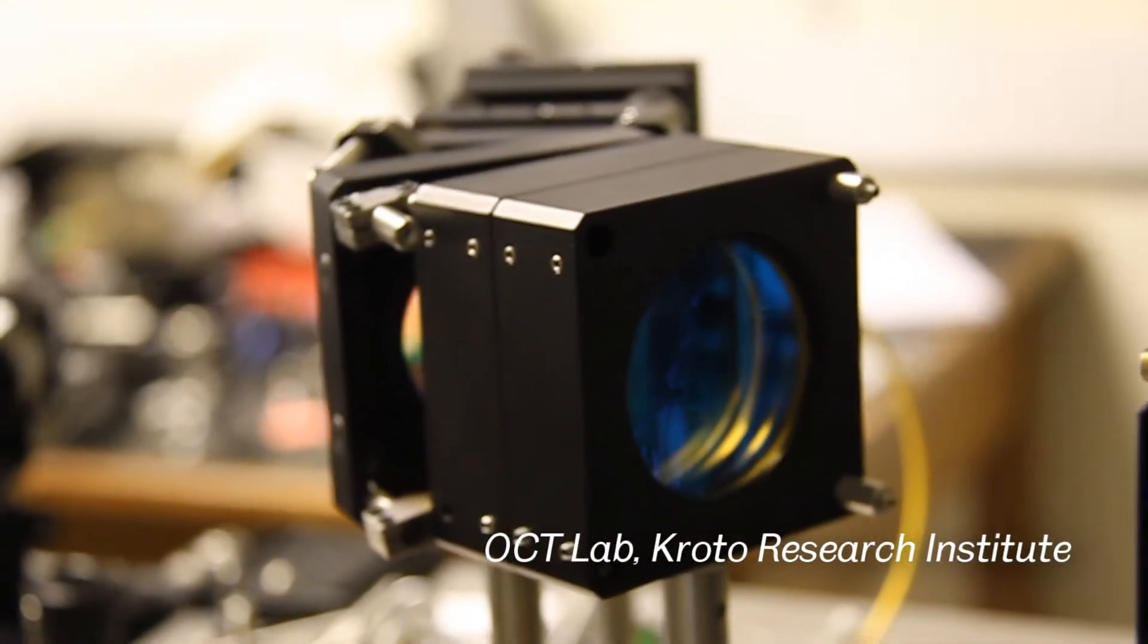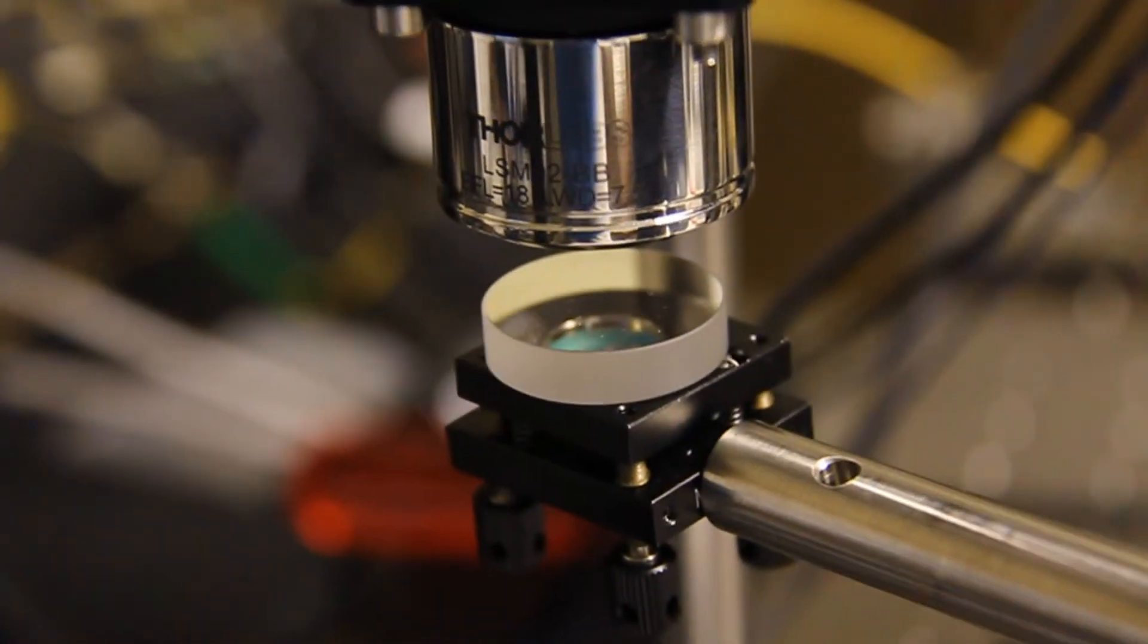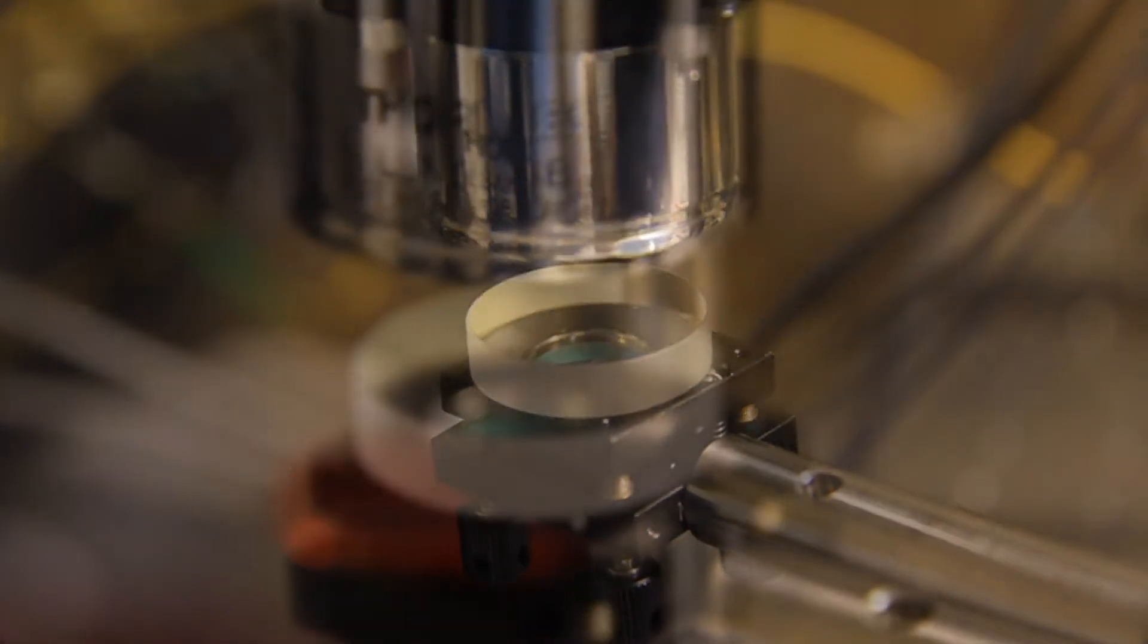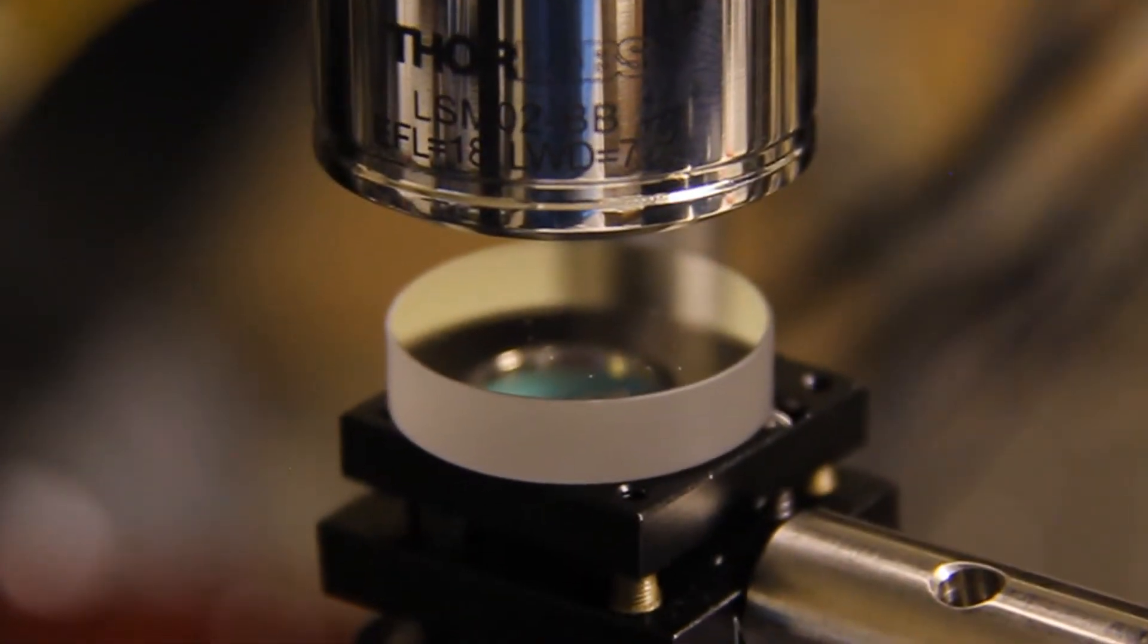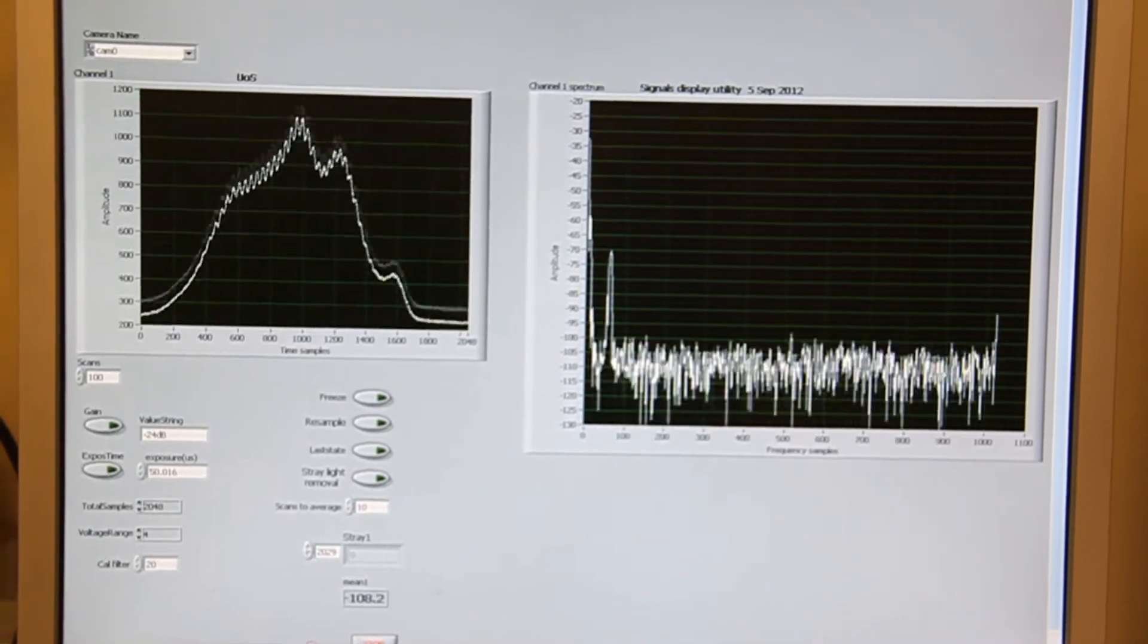But a human operator needs to trace throughout the image both the skin surface and the dermal epidermal junction, and the way he traces this is using some kind of graphics tablet to trace along these boundaries.